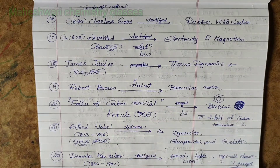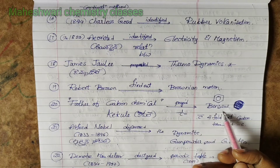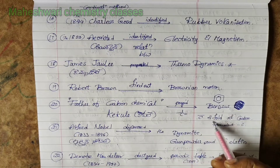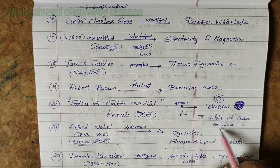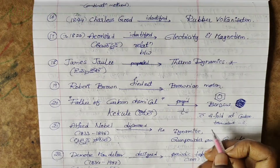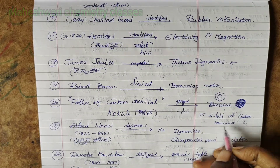Father of carbon chemistry: he explained that carbon is tetravalent — having a four-fold carbon tetravalent bond.